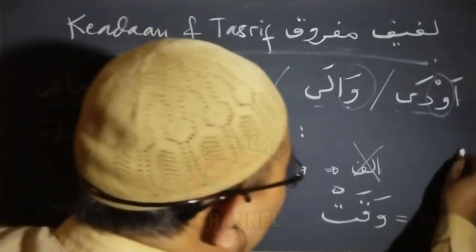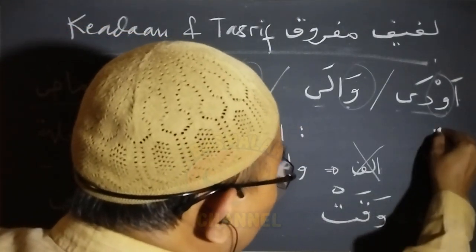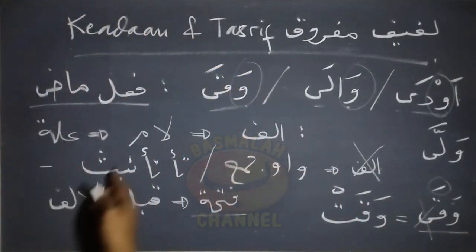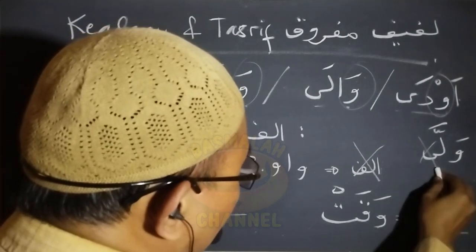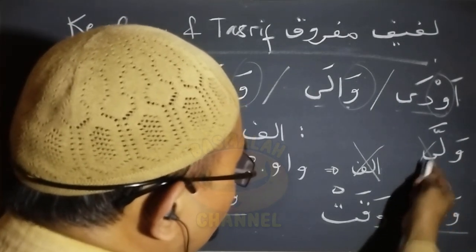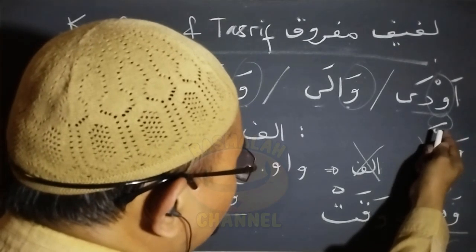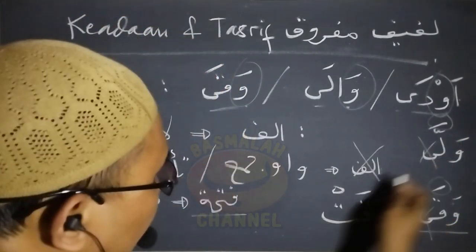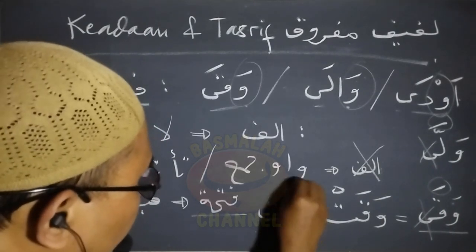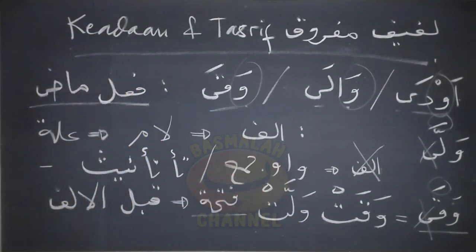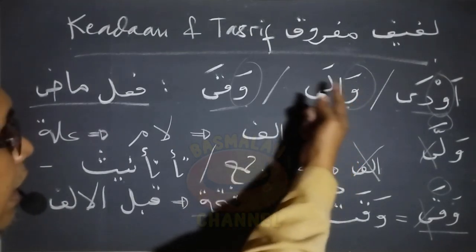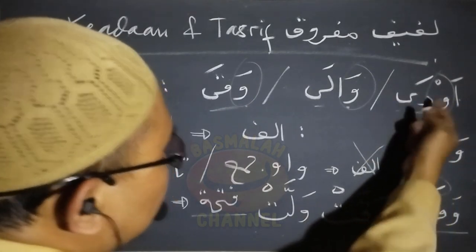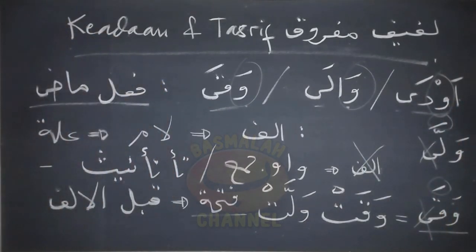Lafad wakaw ini adalah lafif mafruk. Manakala bersambung dengan ta' ta'nis, maka prosesnya adalah huruf ilat alifnya ini dibuang, selanjutnya huruf sebelum alif ini harkatnya ditetapkan dengan fatha, dan selanjutnya cukup ditambah dengan ta' ta'nis, sehingga wakaw menjadi wakat. Begitu juga dengan lafad wala, manakala bersambung dengan ta' ta'nis, alifnya dibuang dan huruf sebelum alif diberi harkat fatha, sehingga wala menjadi walat. Begitu juga dengan lafad auda menjadi audat.